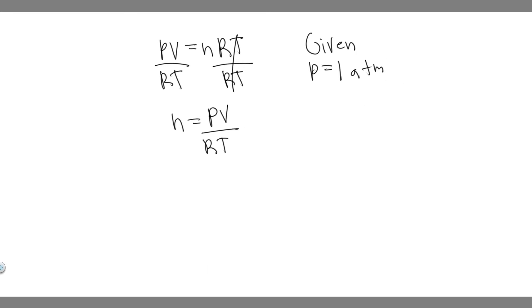But when we solve this, we need to make sure it's in Pascals. So 1 atmosphere is just equal to 1.01325 times 10 to the 5, and then you can just write PA, which is just equal to Newton per meter squared.